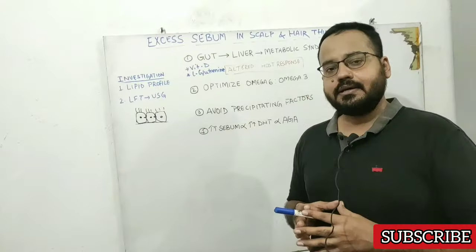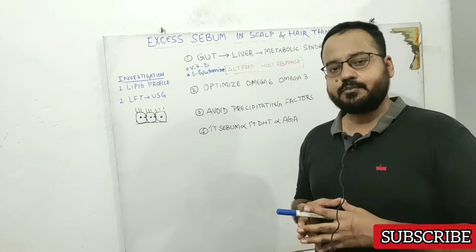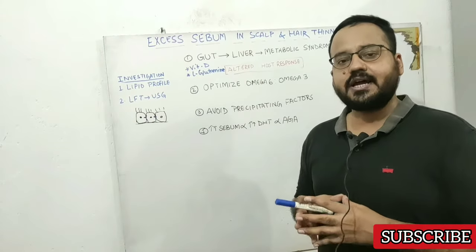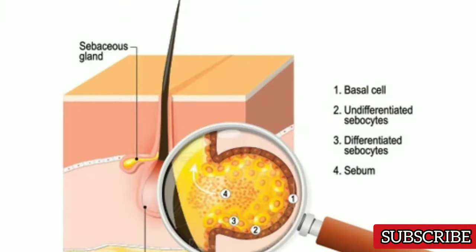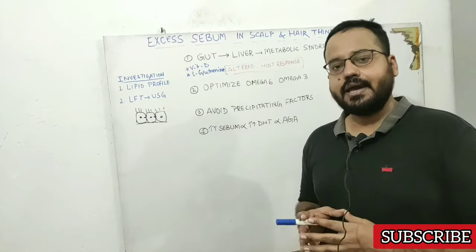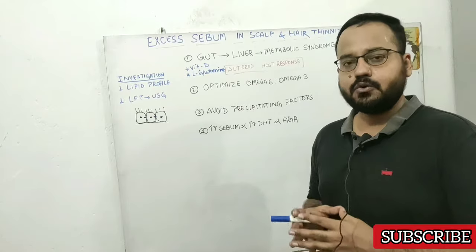The problem is when your sebaceous glands become hyperactive, they produce too much sebum. This excess sebum can accumulate in the excretory duct of your hair follicle, clog the hair follicle, and impair oxygen delivery at the root of your hair.